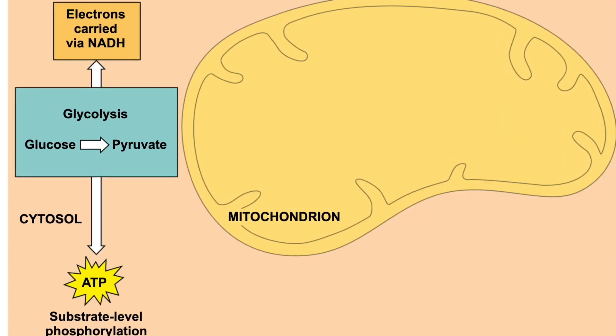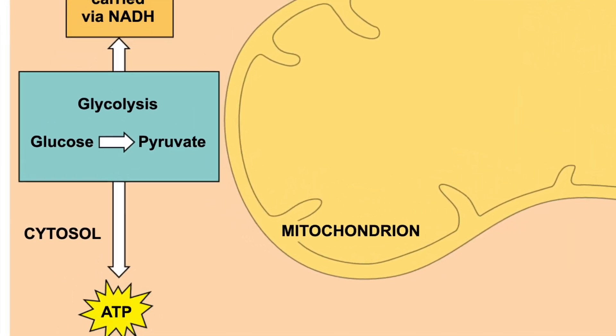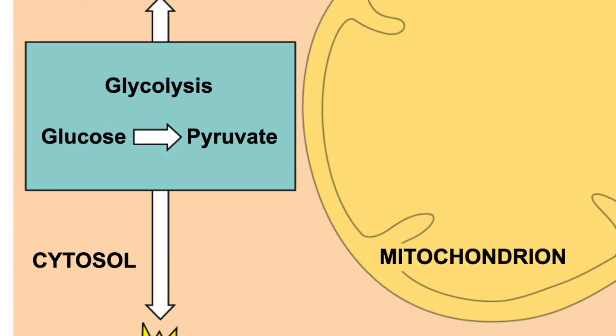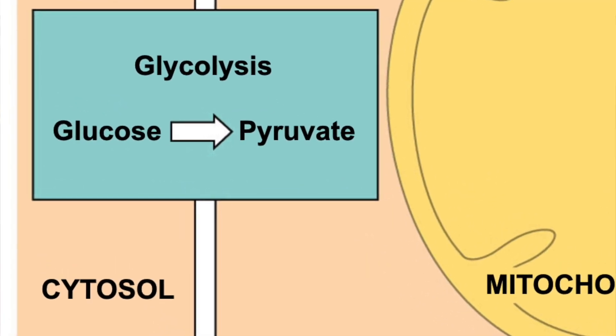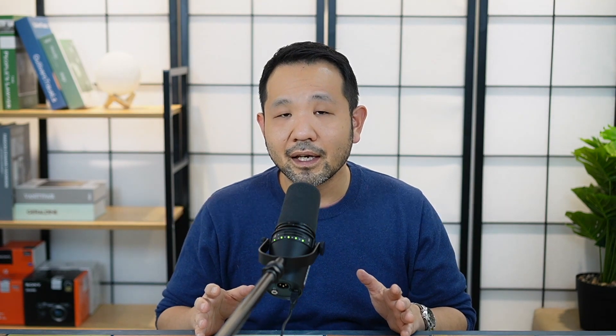Well, it actually starts off very simple: where glycolysis takes place. As you can see in this diagram, glycolysis is shown to take place in the cytoplasm. But what College Board really wants you to know is how the location of glycolysis is linked to two other very important ideas.